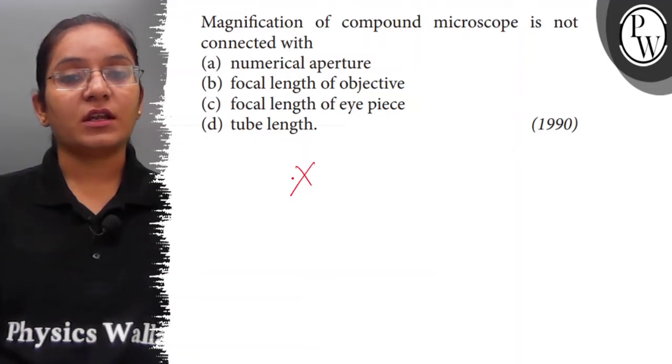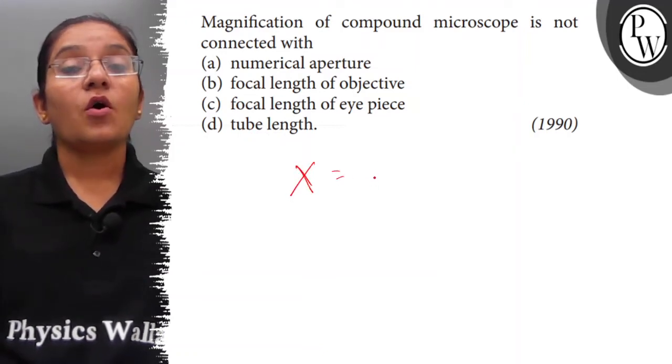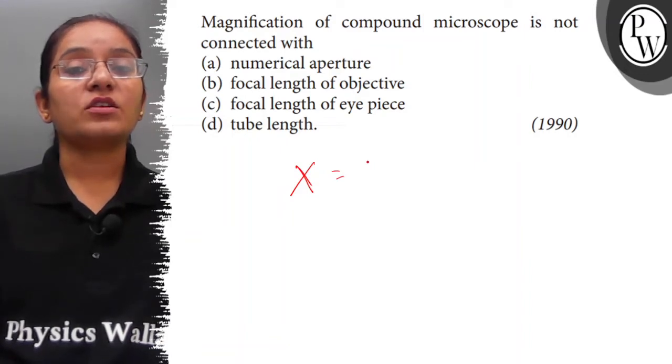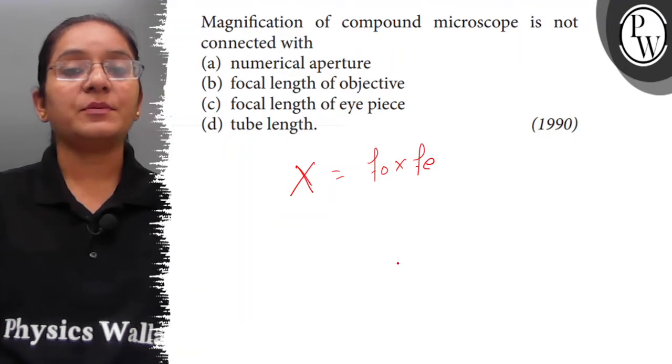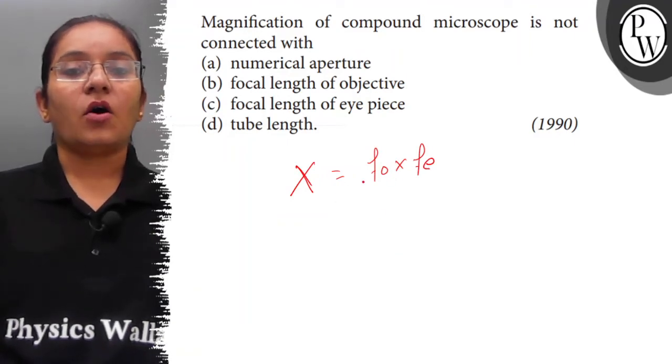Magnification is represented by X. It depends on the focal length of objective lens as well as the focal length of eyepiece lens and also on the tube length.